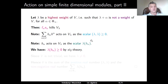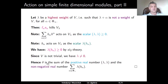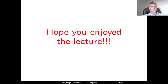Since the Killing form on the Cartan subalgebra is positive definite, the scalar product of λ with itself is a non-negative real number. Note also that H_α acts on V_λ as the scalar λ(H_α). Using the SL2 theory, the highest weights of all simple finite-dimensional SL2-modules are exactly the non-negative integers, so they are greater than or equal to zero. Since V is assumed to be non-trivial, the highest weight λ is non-zero, which means the scalar product of λ with itself is strictly greater than zero. Our scalar is therefore a linear combination with positive real coefficients of a strictly positive real number, confirming it is positive. This completes the proof of the theorem. Thank you very much, and I hope you enjoyed the lecture.